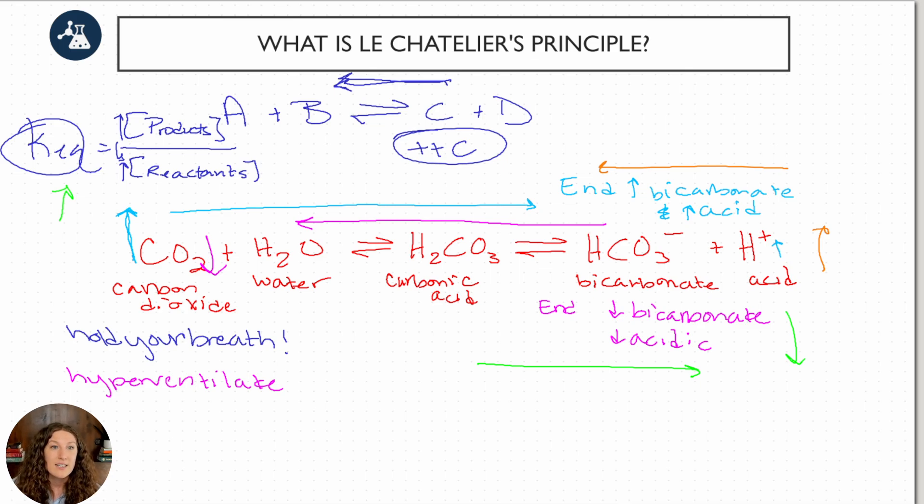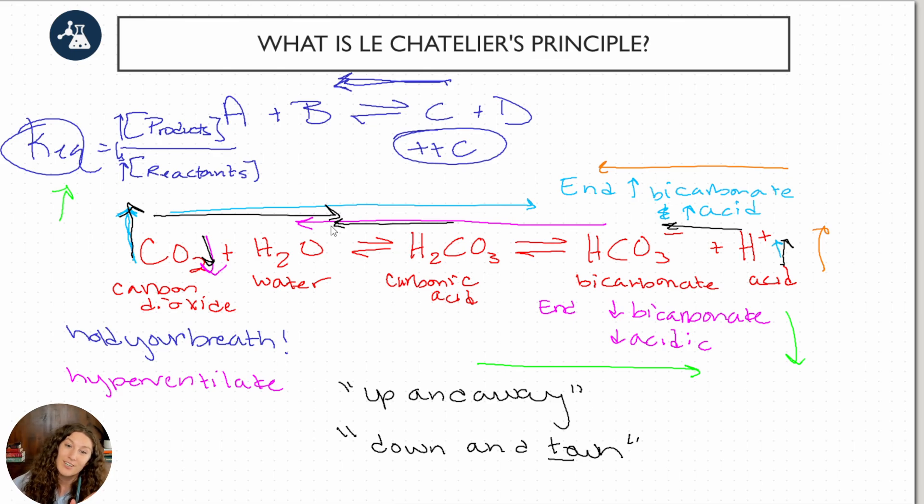One of my tricks for this is a little kind of mnemonic where we say up and away, where if we increase one of our components, we're going to drive the arrow away from it. Increase acid, drive the arrow away. Increase CO2, drive the arrow away. Or down and two, like downtown, down and two, down and town. And so if our concentration decreases, we'll point the arrow of the direction of change towards that arrow. Now there's a lot of ways we can describe this. We can say favoring, driving towards products, driving towards reactants, shifting left, shifting right. All right, there's a lot of different versions, but it's all the same principle.